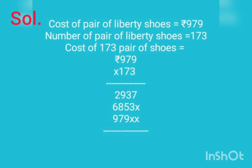3 nines are 27, carry 2, write 7. 3 sevens are 21 plus 2 is 23, so we will write 3 and carry 2. 3 nines are 27 plus 2 will become 29. Now for the next line, put a cross under 7.